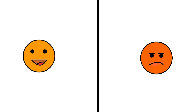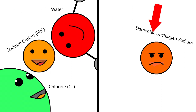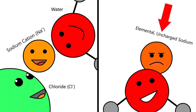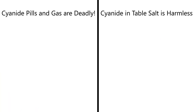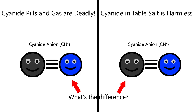In a way, chemicals are moody. Their reactivity is highly dependent on both the state they are in and the compounds around them. Take sodium for example — cationic sodium found in salt is fairly harmless, but elemental sodium is explosive if it comes in contact with water. Both the deadly cyanide found in pills and gas, and the harmless cyanide we're talking about, are negatively charged ions composed of carbon triple bonded to nitrogen.